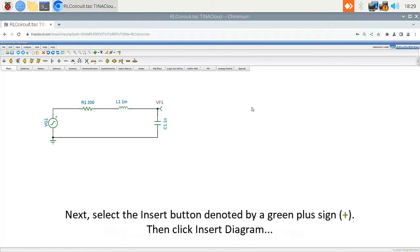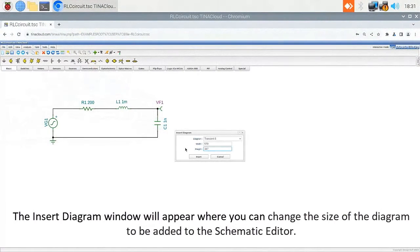Next, select the Insert button denoted by a green plus sign. Then click Insert Diagram. The Insert Diagram window will appear where you can change the size of the diagram to be added to the Schematic Editor.